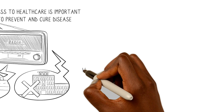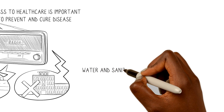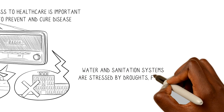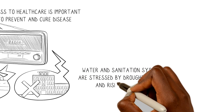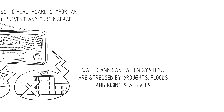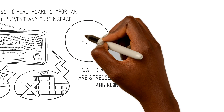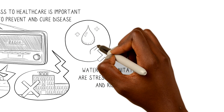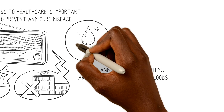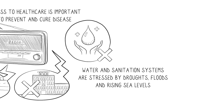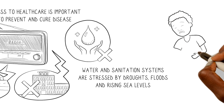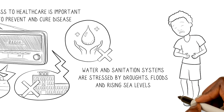Water and sanitation systems are stressed by droughts, floods, and rising sea levels. This affects the availability of clean water for irrigation and human consumption, such as washing, drinking, and cooking. This could make people sick and cause diarrhea in children.